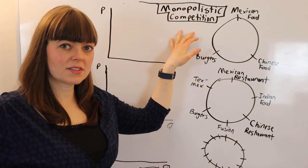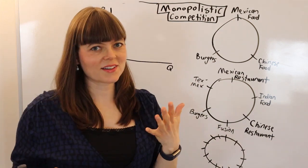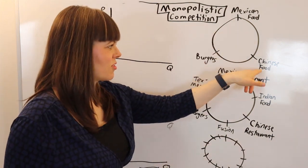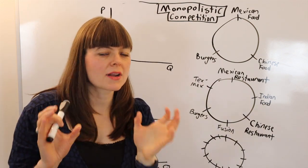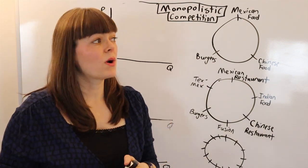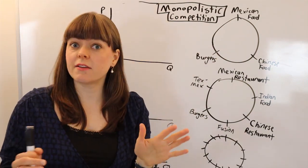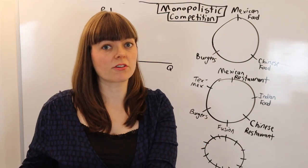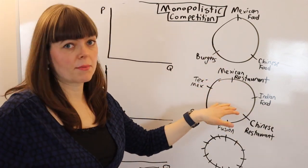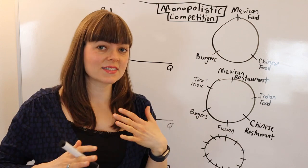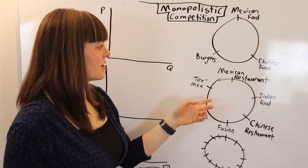Monopolistic competition has the characteristic of product differentiation, so each restaurant has a unique flavor and has a little monopoly of its own. What differentiates monopolistic competition from monopoly, even though they use the same model, is the elasticity of demand. The elasticity of demand with monopolistic competition is more elastic because there are imperfect substitutes that people can go to.